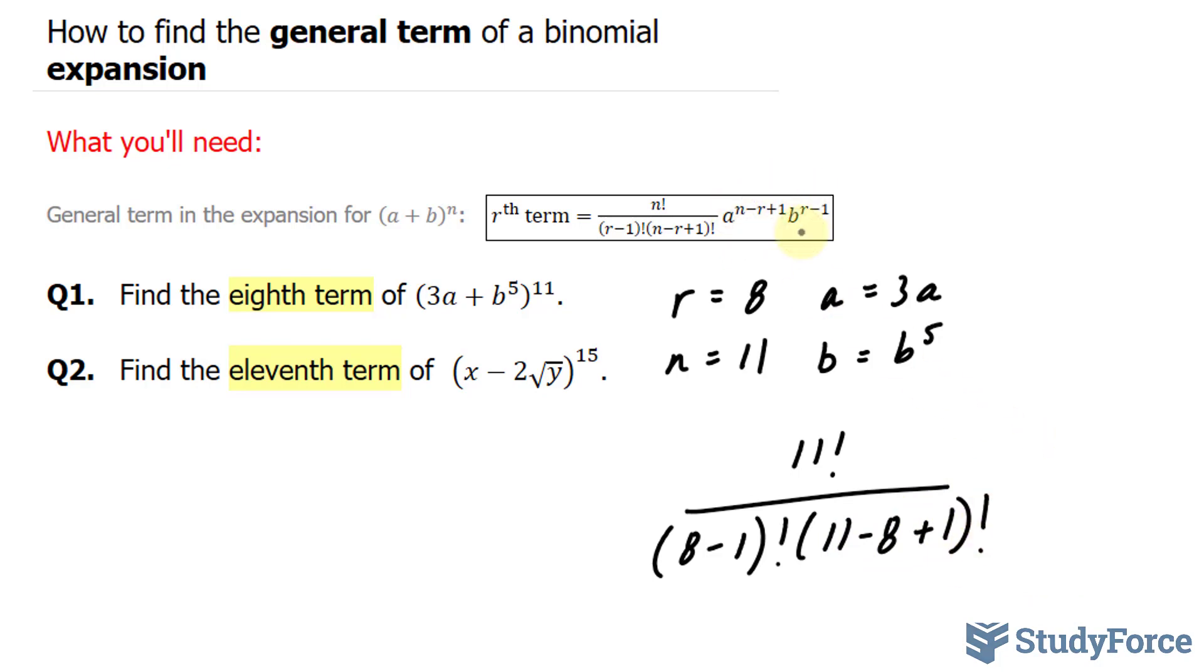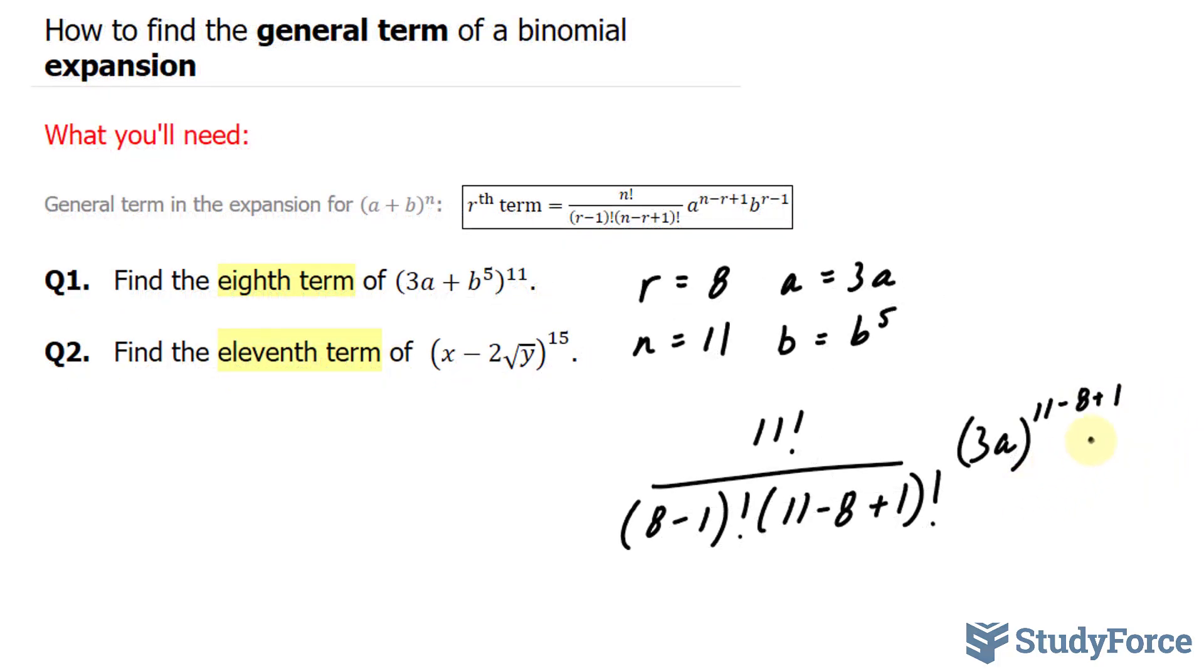And this part will be 3a raised to the power of 11 minus 8 plus 1 and b to the power of 5 raised to the power of 8 minus 1, which is 7.